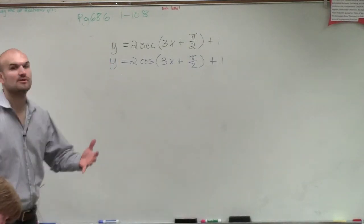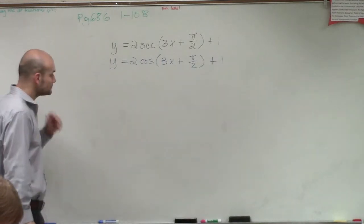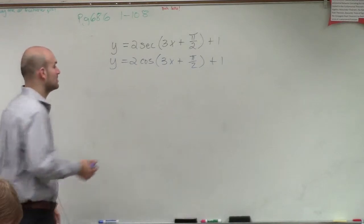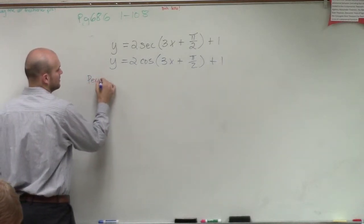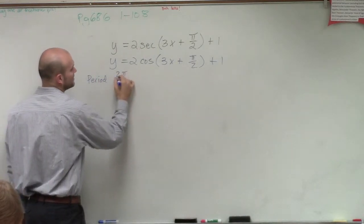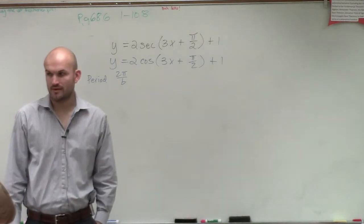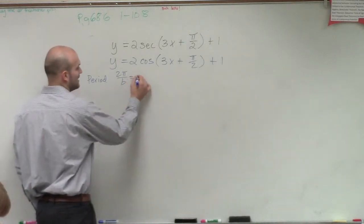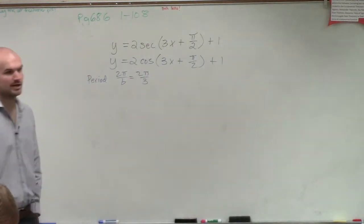The first thing is we can always pick the start and end. One of the first things we look at is the period. The period is 2π divided by B. So we take 2π divided by 3, and that's going to be our period.